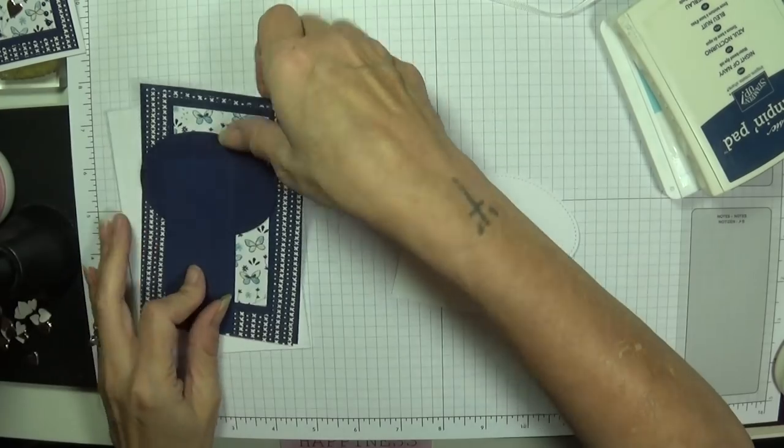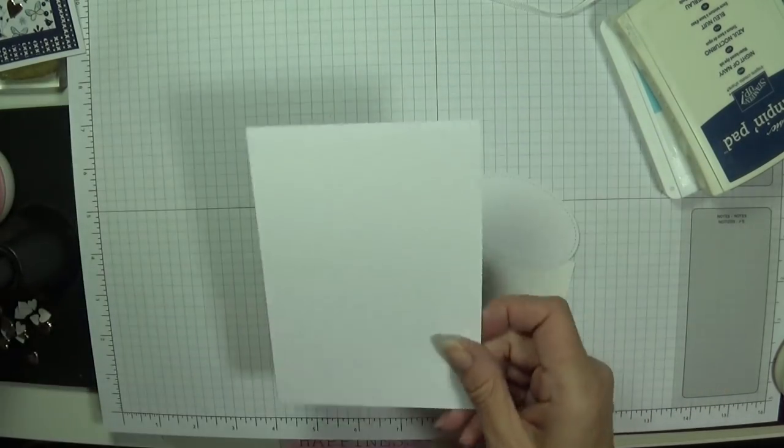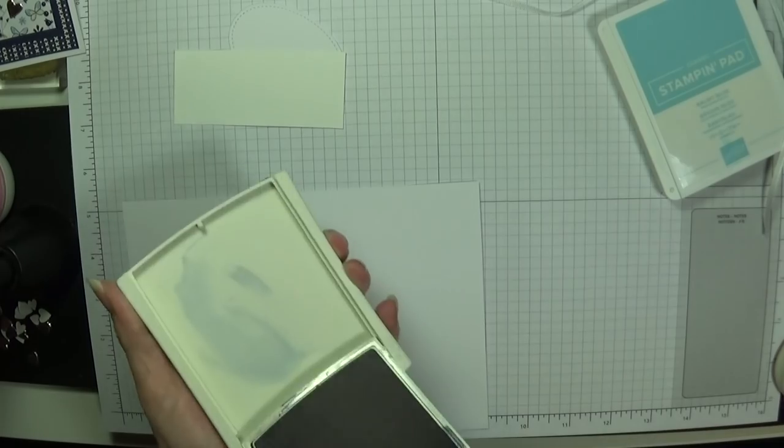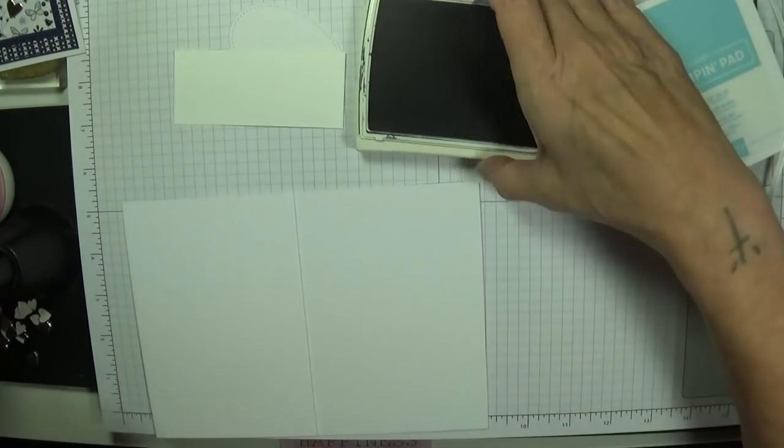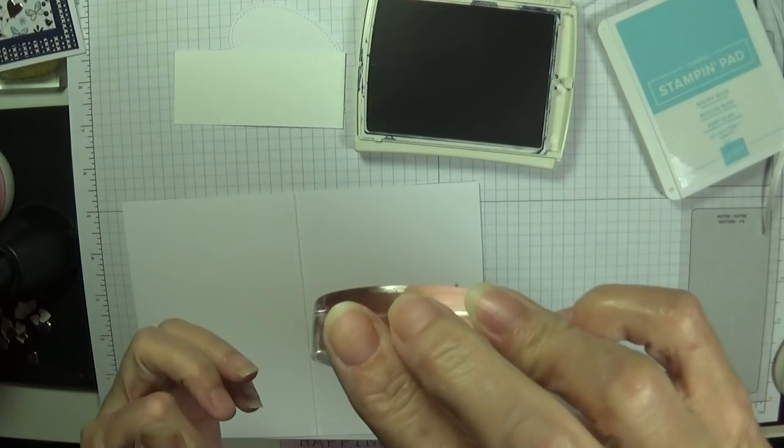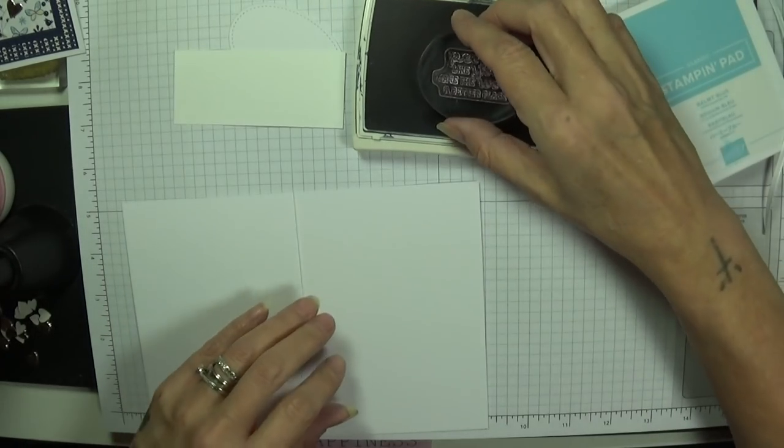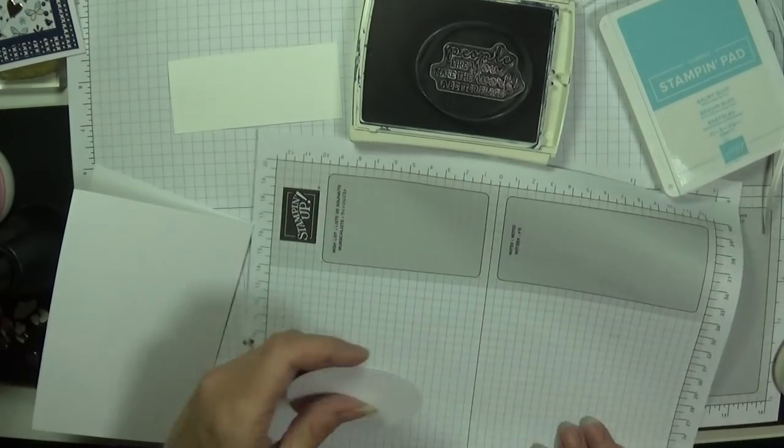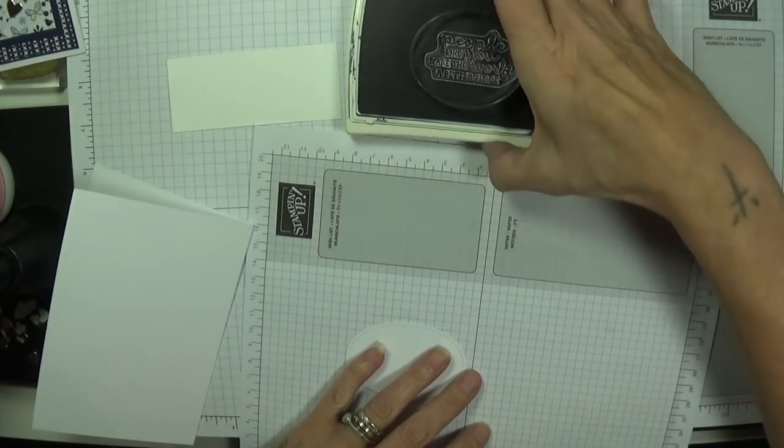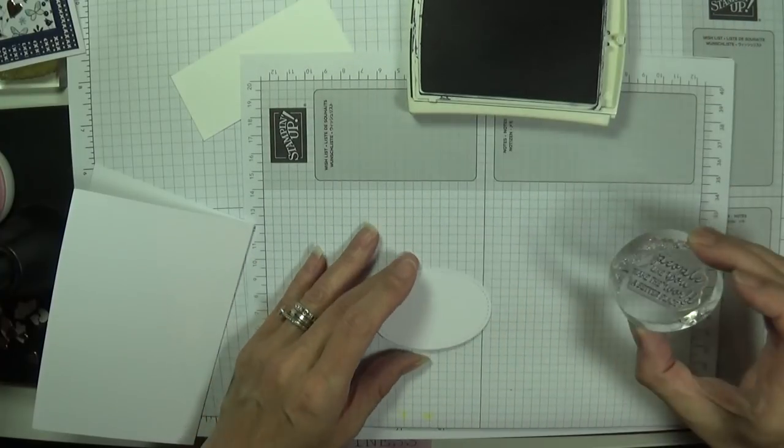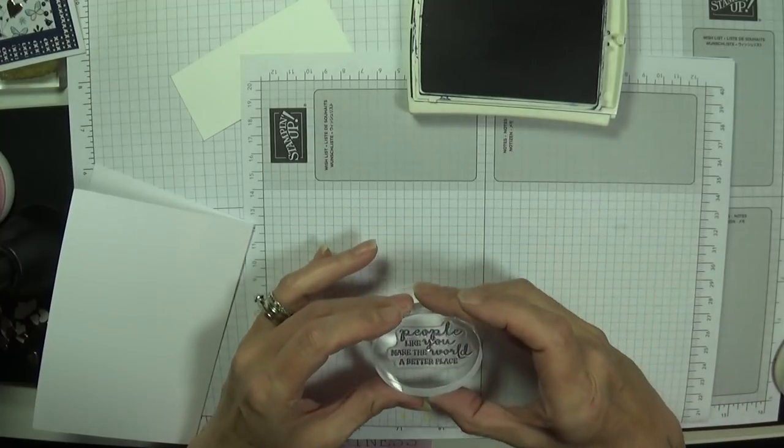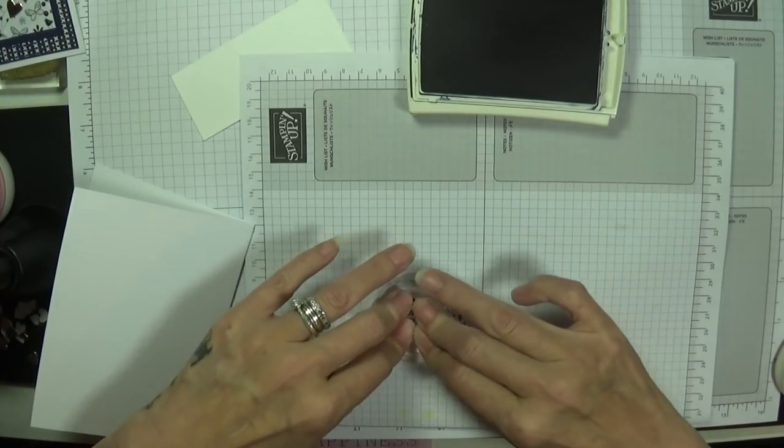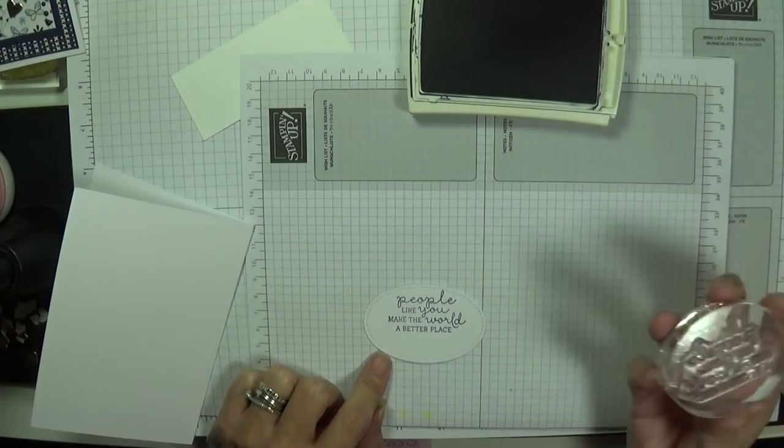So we're stamping, stamping, and stamping. We're going to put these together shortly on the inside of our card. I love the sentiment in this as well. You know, people like you make this world a better place. Absolutely beautiful, which is going on my oval. I'm going to get some scrap and I'm going to keep this towards the top so I can add those lovely little butterflies on the bottom.